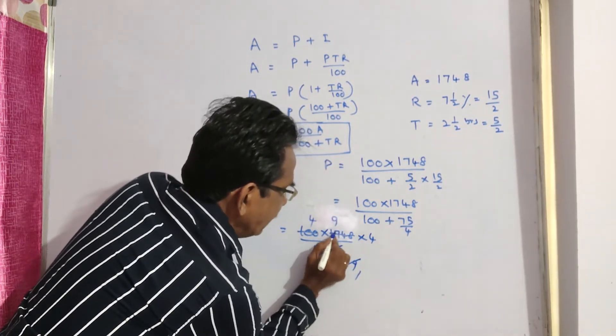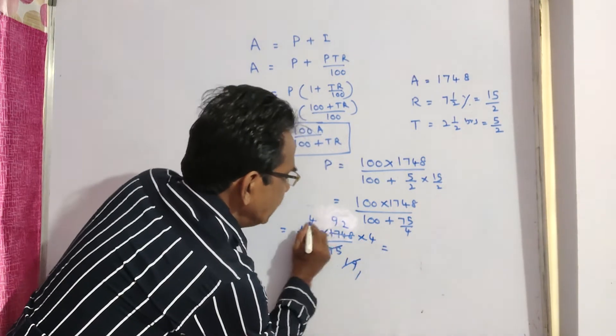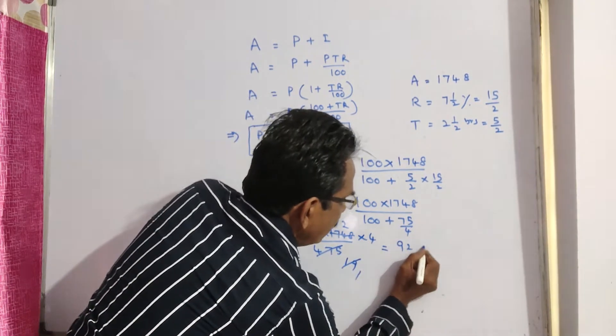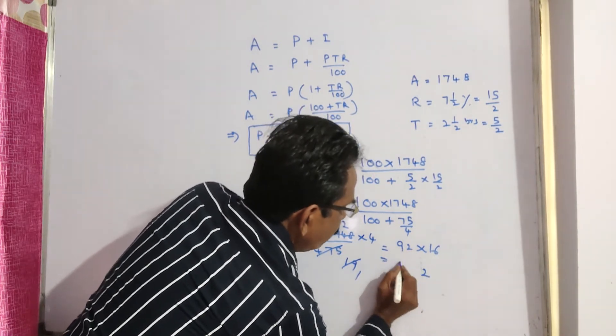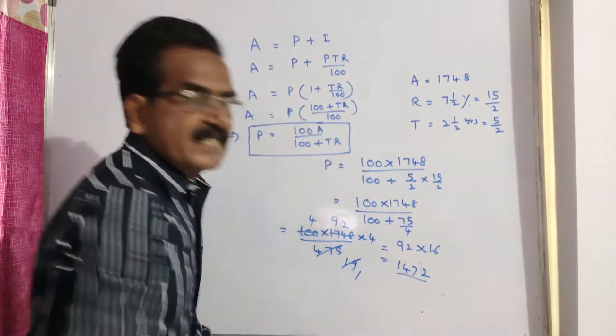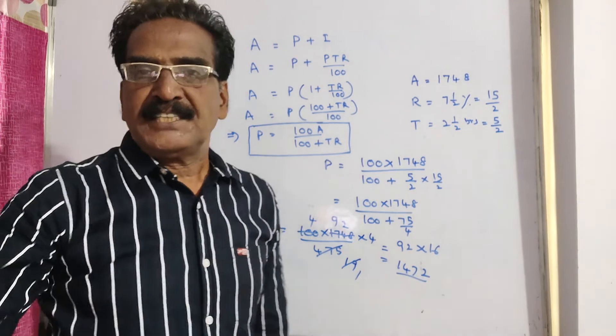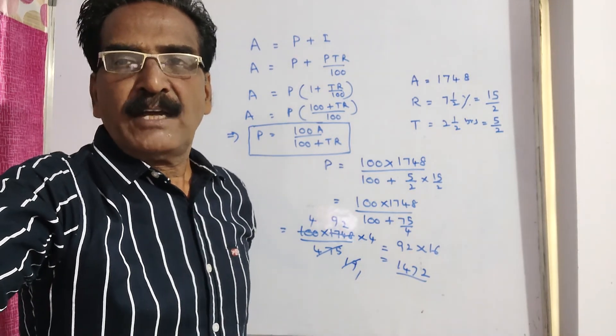So 92 into 16, 92 into 16, 16 to 32, 16 is 144 plus 3, 147, 1472 is your answer friends. Thank you, have a nice day.